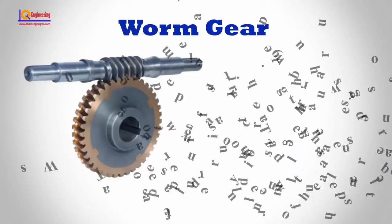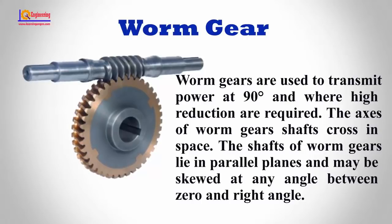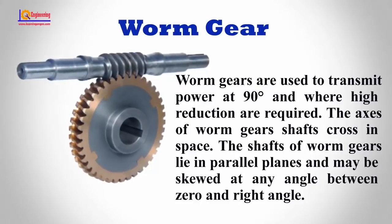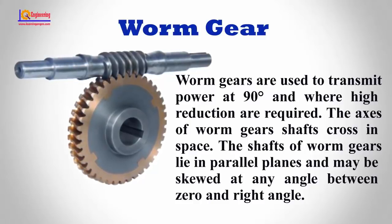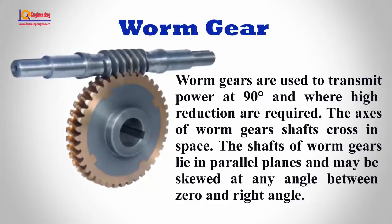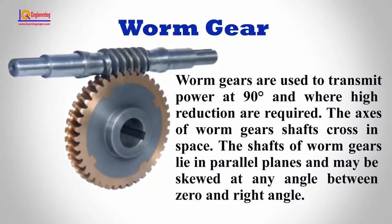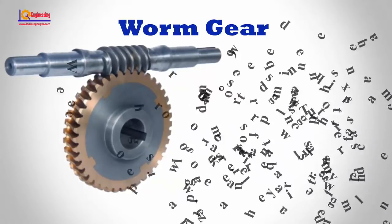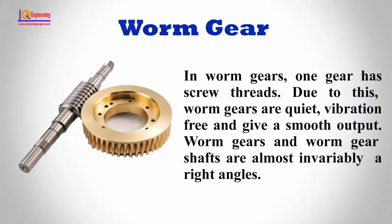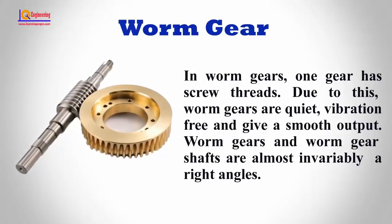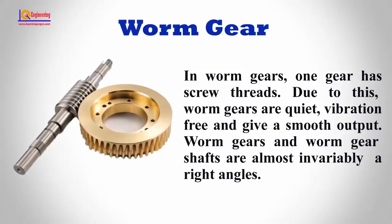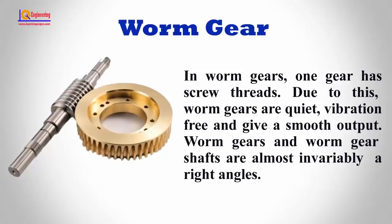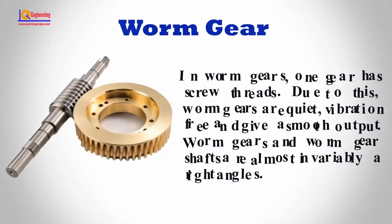Worm Gear. Worm gears are used to transmit power at 90 degrees and where high reductions are required. The axes of worm gear shafts cross in space. The shafts of worm gears lie in parallel planes and may be skewed at any angle between zero and a right angle. In worm gears, one gear has screw threads. Due to this, worm gears are quiet, vibration-free, and give a smooth output. Worm gears and worm gear shafts are almost invariably at right angles.